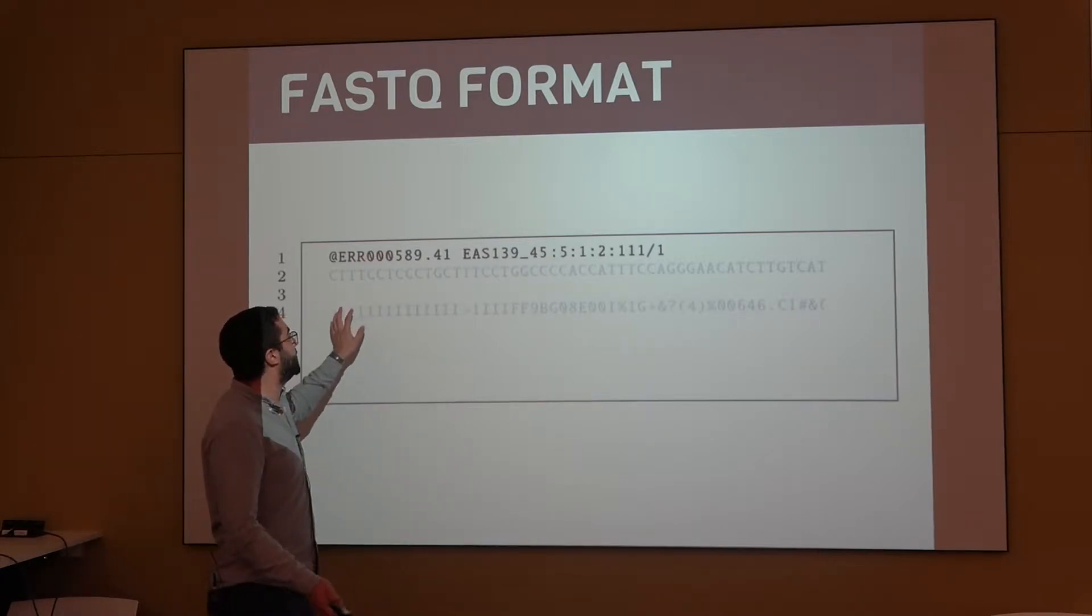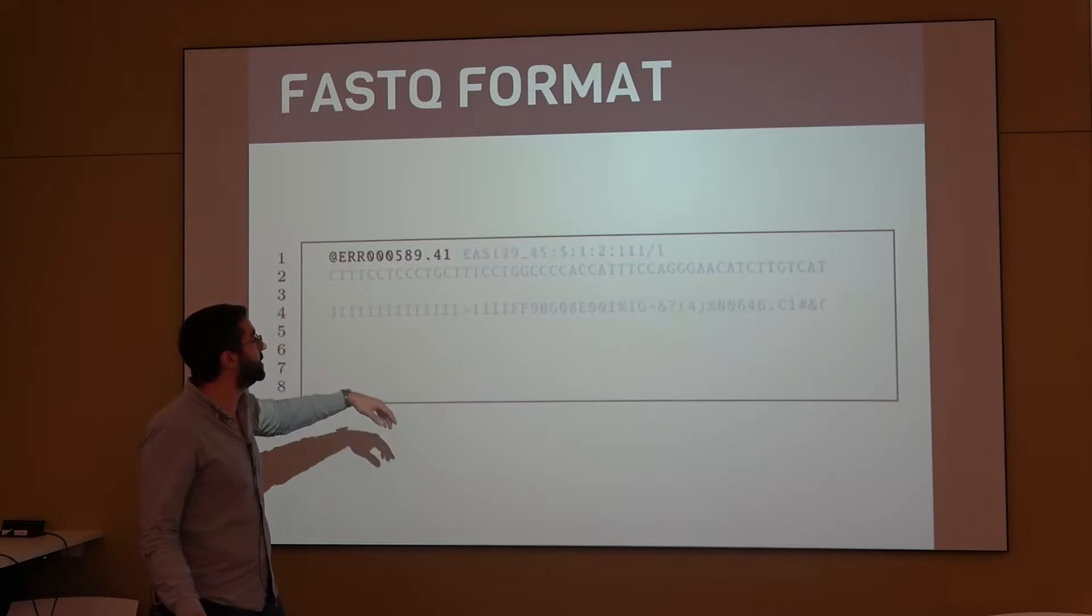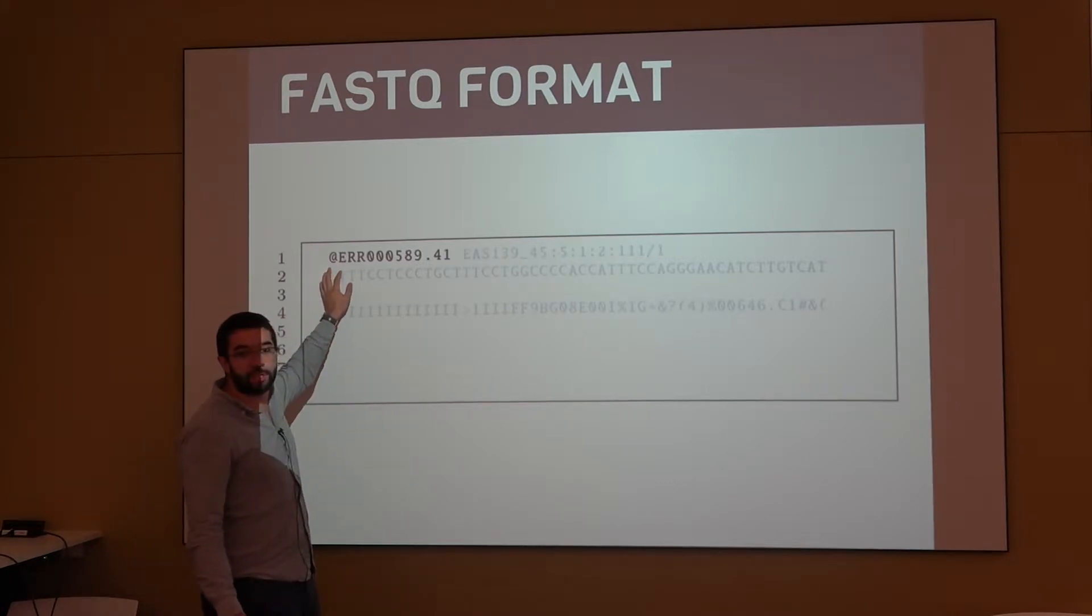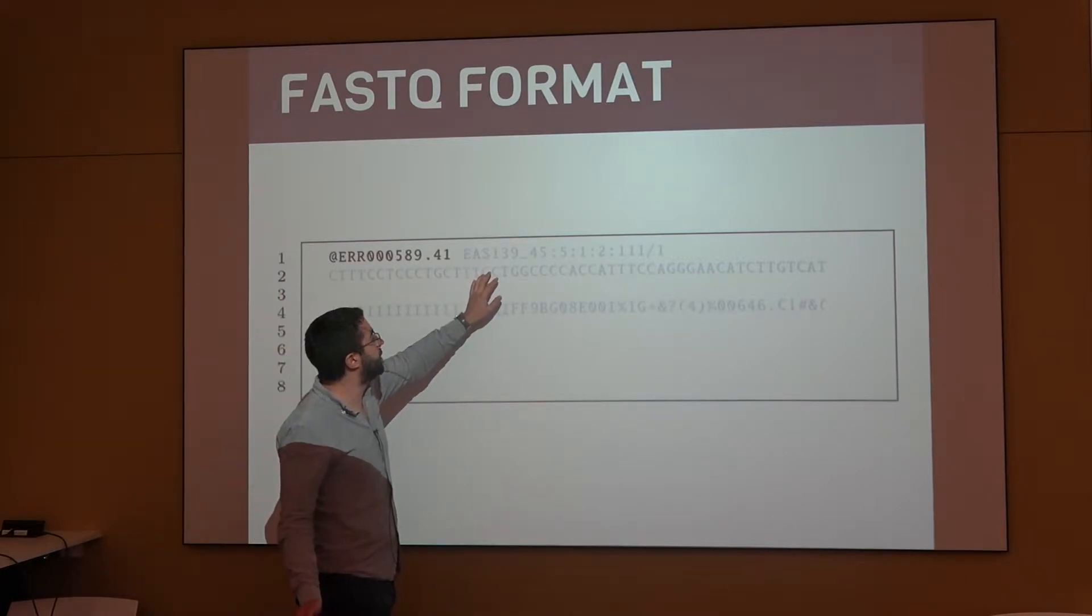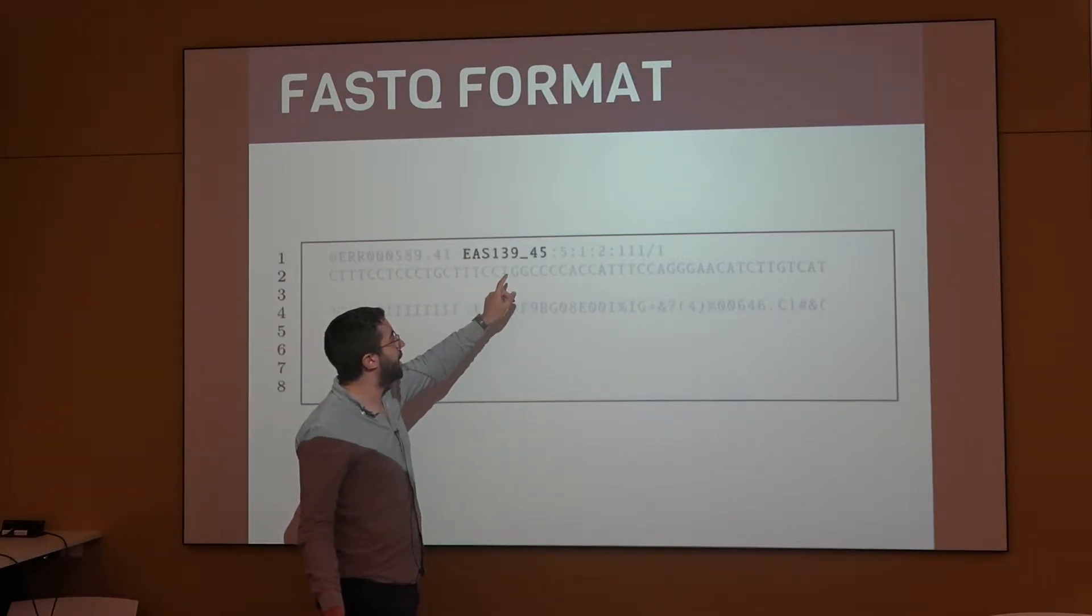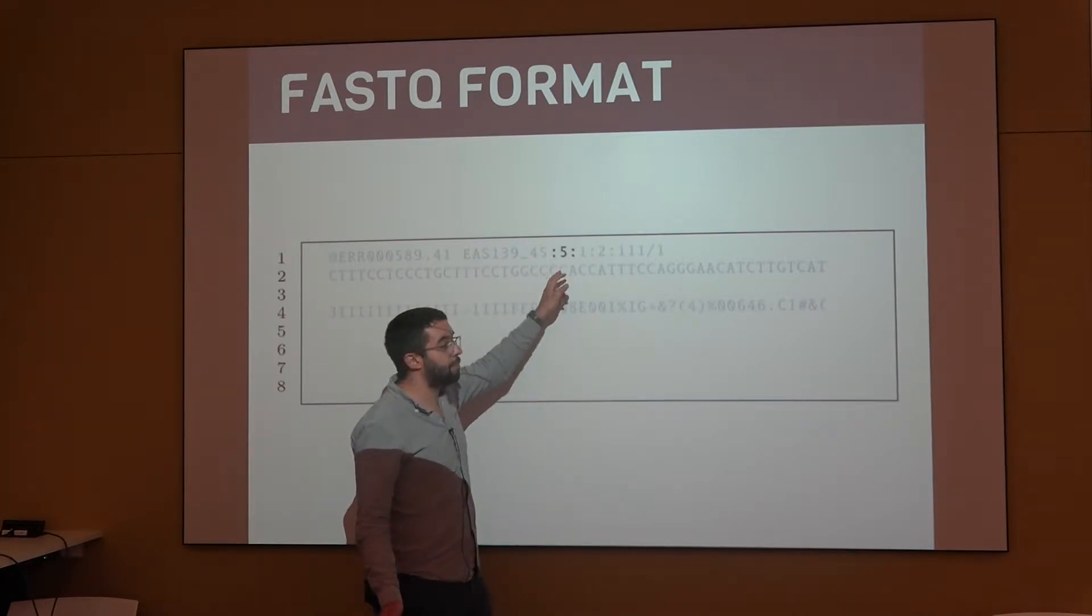Then, there's an identifier for the read, and this is unique for each one of the lines. It contains the name of the machine where the read was read, the name of the project, then the number of the lane.